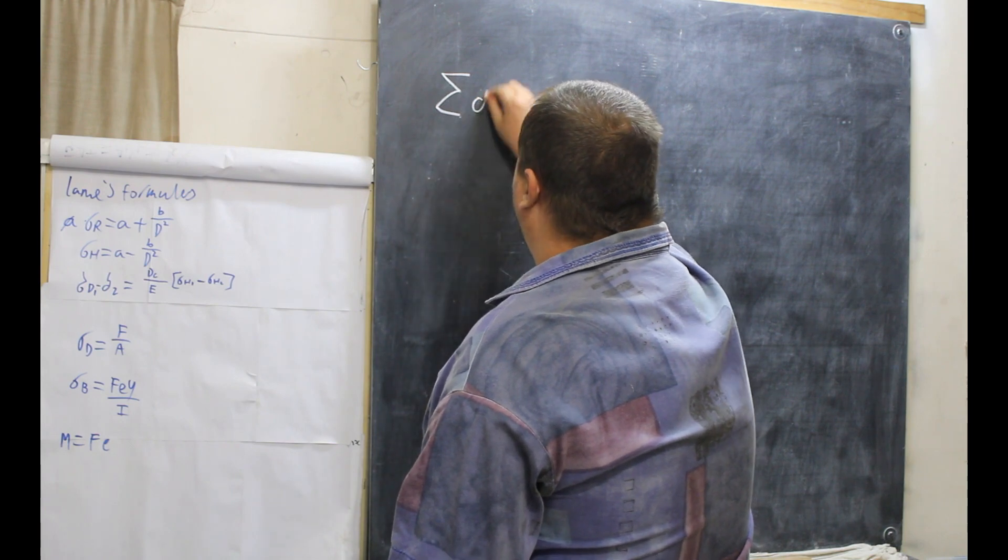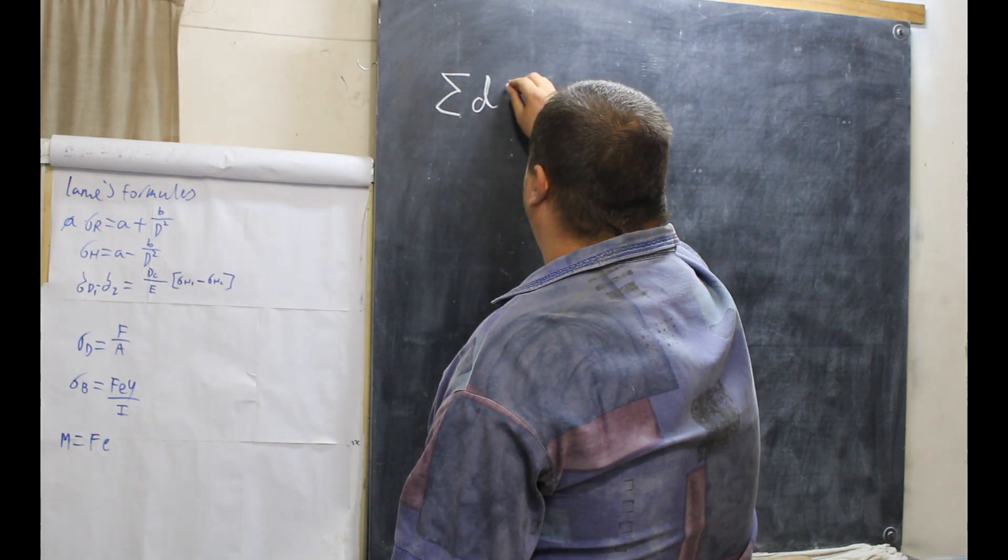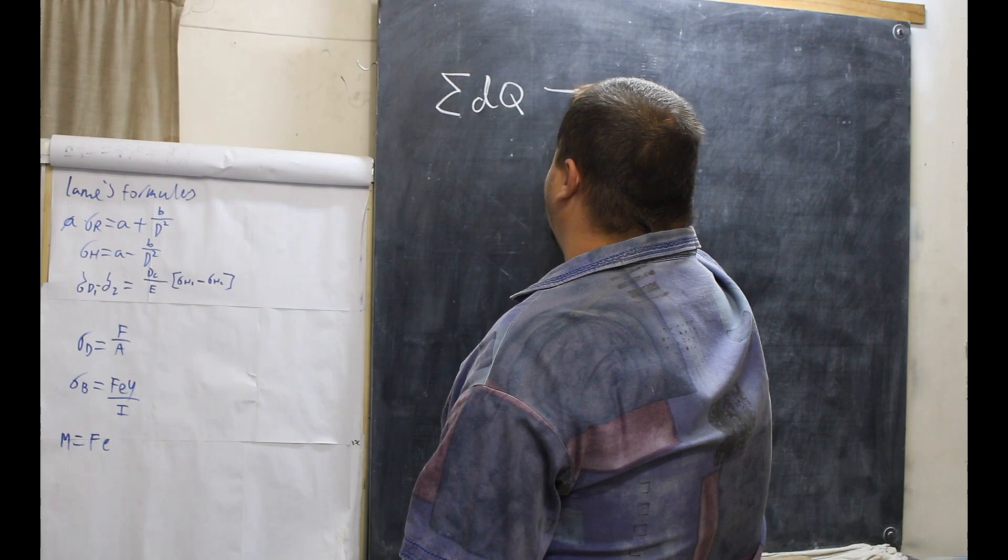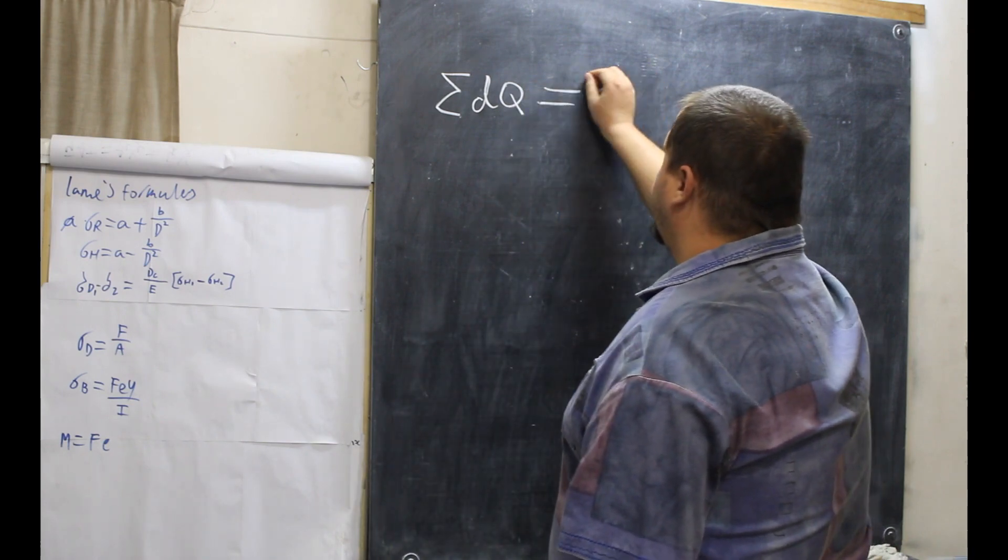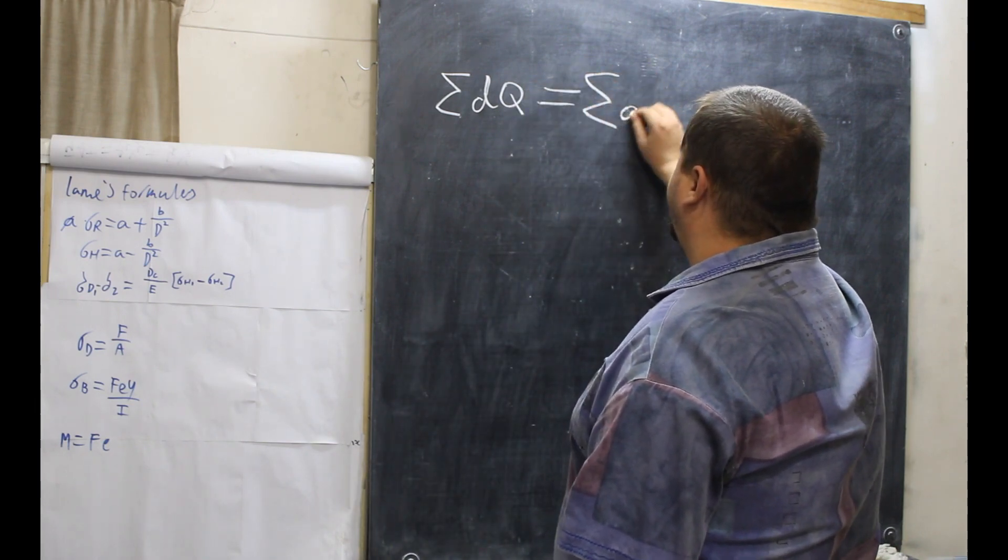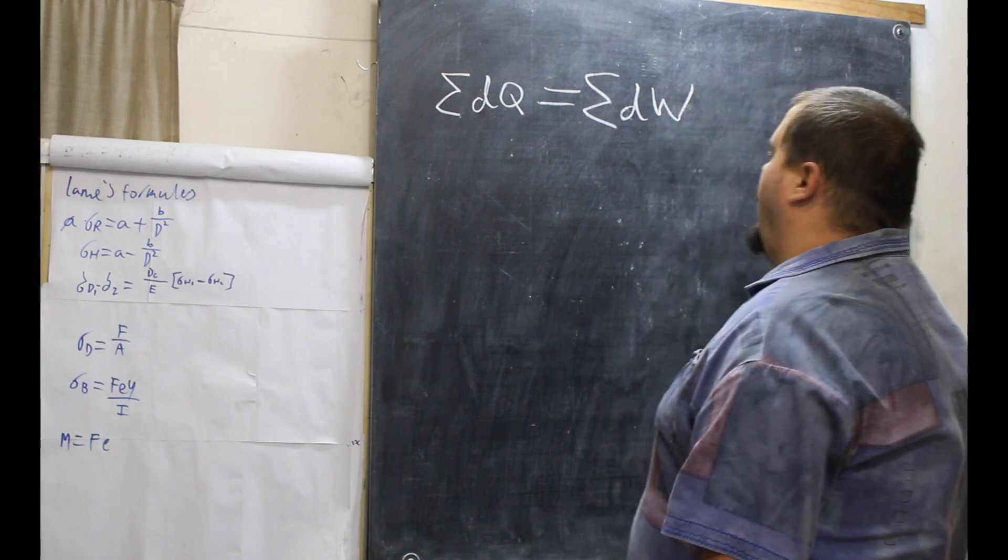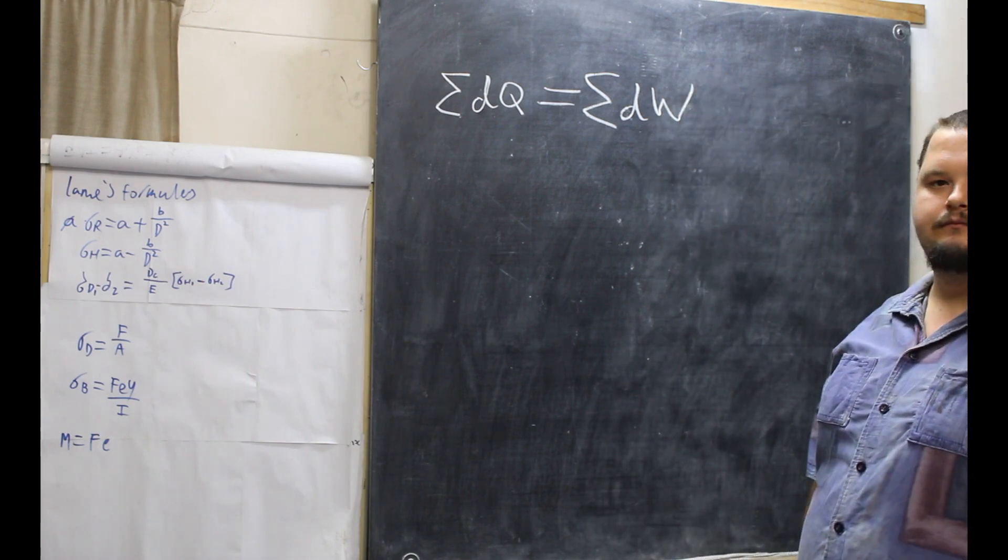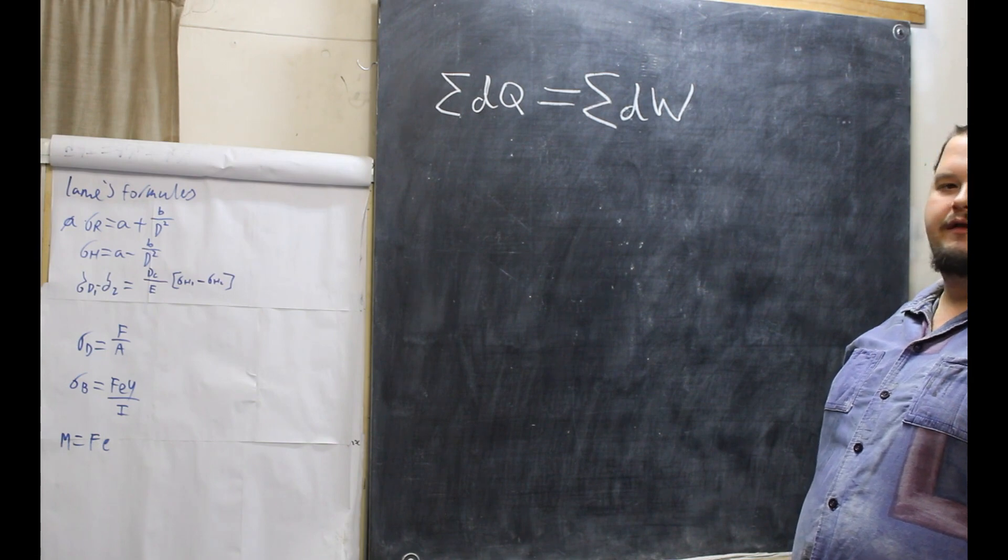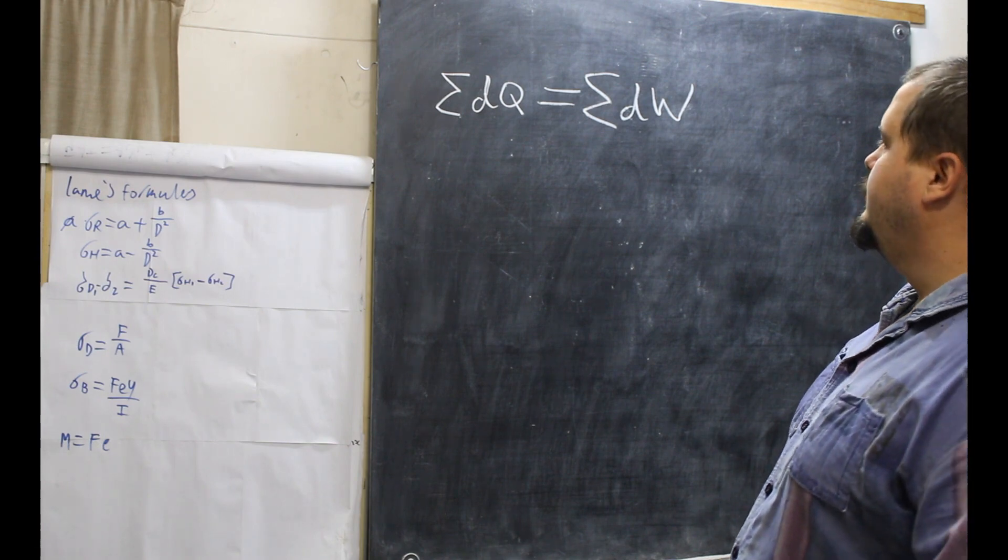The sum of DQ, which is heat, is equal to the sum of D work. This is the formula that we will be using in the sum.